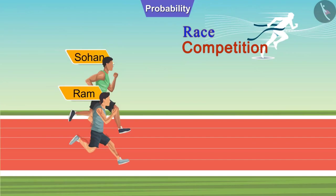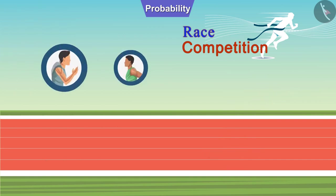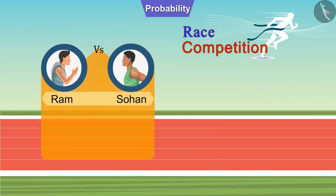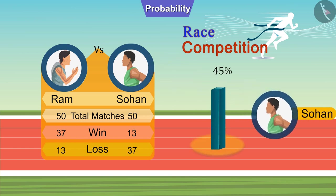Ram and Sohan participated in a race competition in which these are the only two players. Can you tell what is the probability of Sohan winning in this race competition? We can easily say 50%. But if I tell you that 50 matches already have been held between Ram and Sohan, in which Ram has won 37 times and Sohan 13 times, will you still say that Sohan has a 50% chance of winning? No.